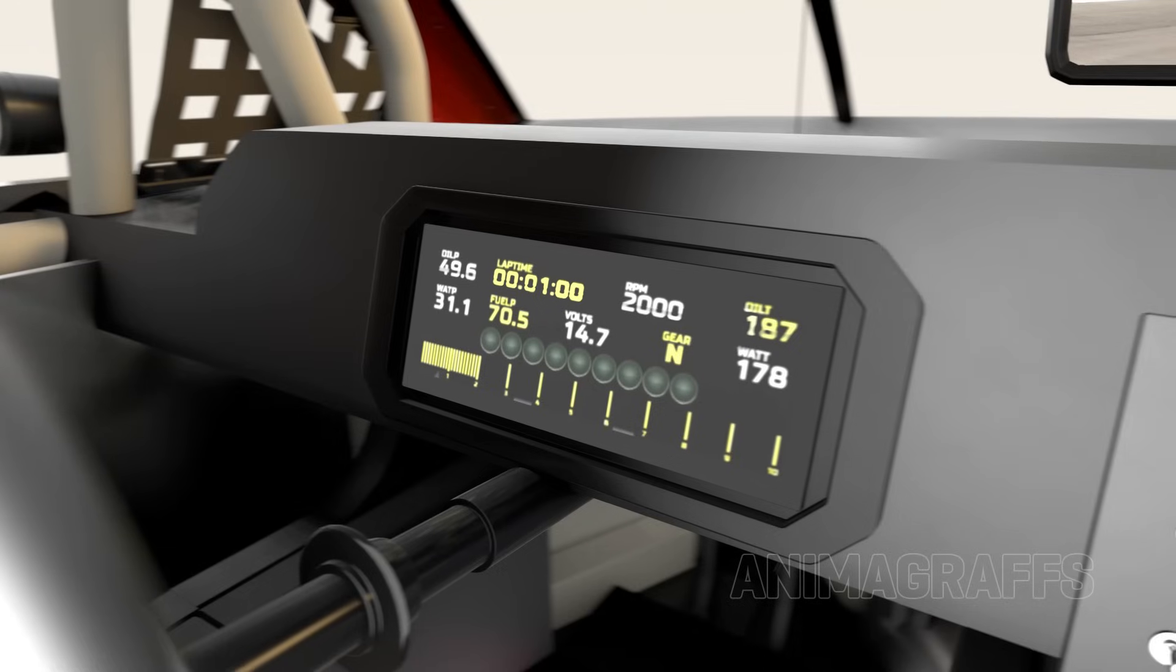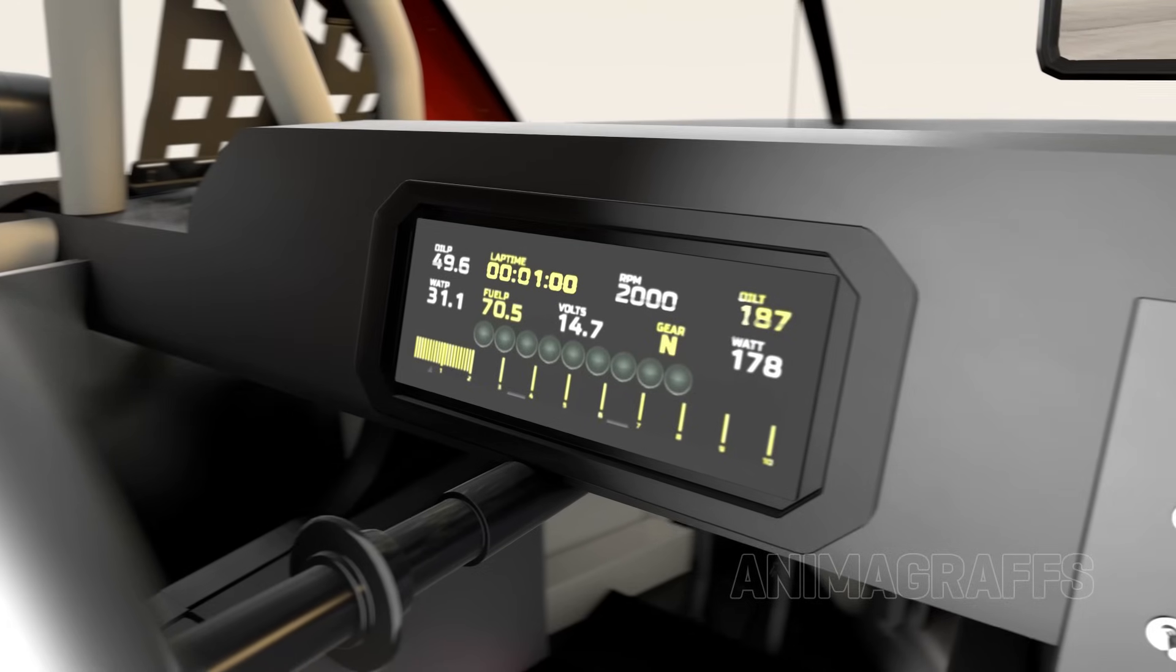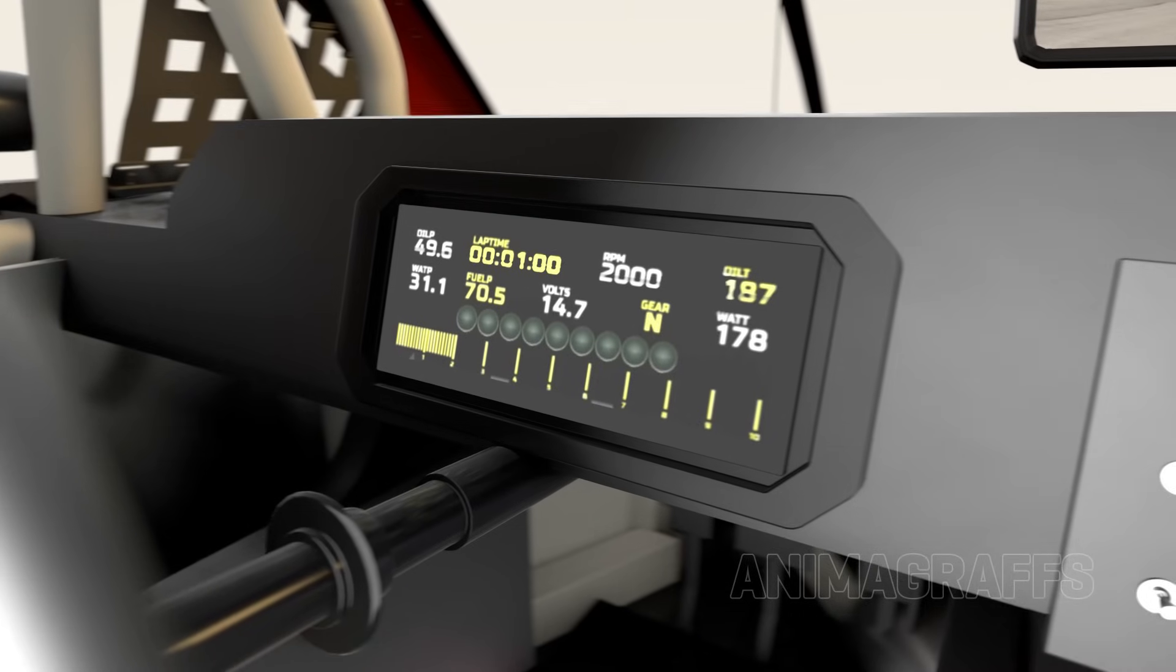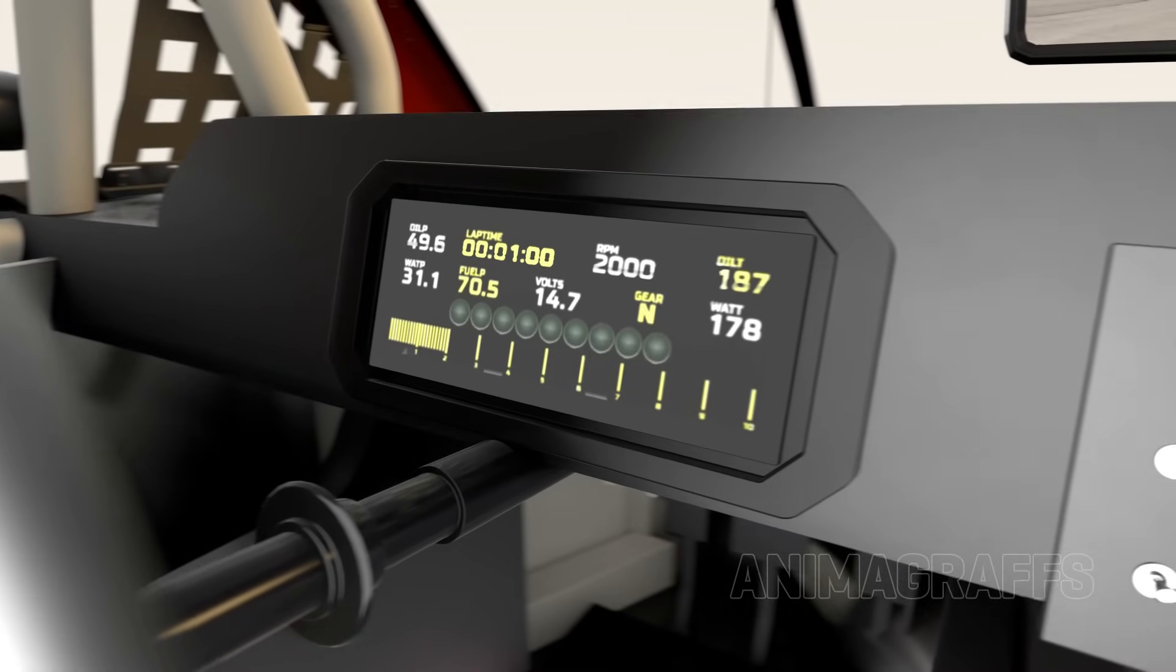A customizable digital dash has replaced dials in recent years, and can display everything from lap times, water and oil pressures, engine RPMs, and pit road lights, among many other options. Per NASCAR rules, speedometers are not allowed to be displayed.